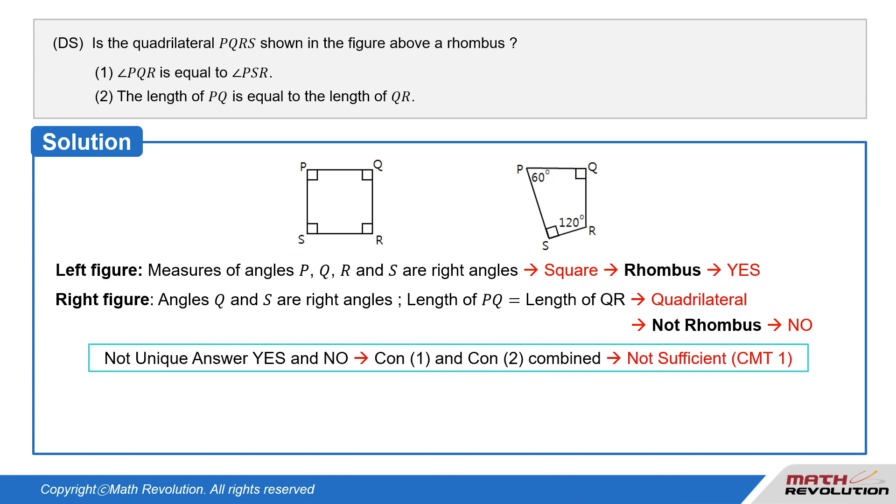Since we do not obtain a unique solution, conditions 1 and 2 combined are not sufficient by CMT1, which means that you get both yes and no. It is not sufficient.